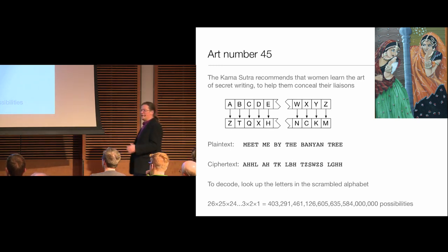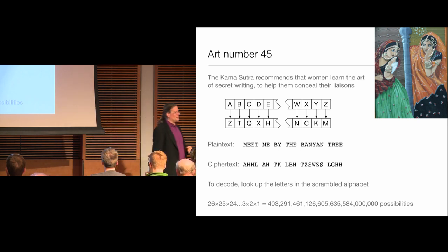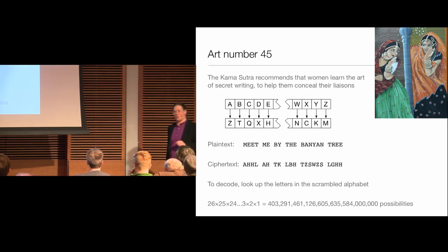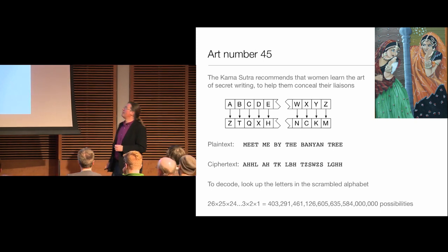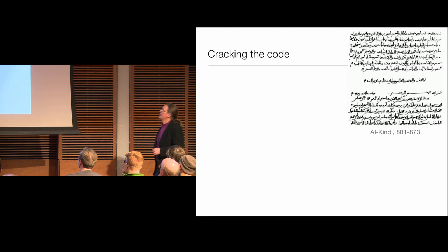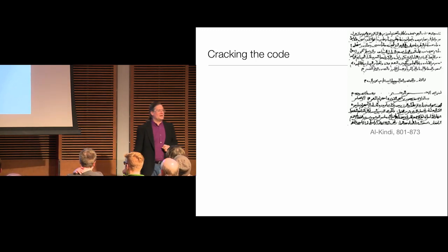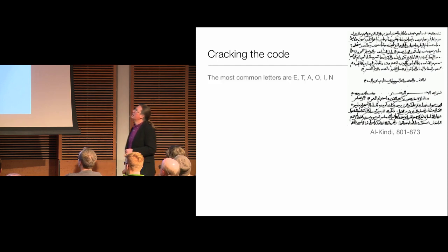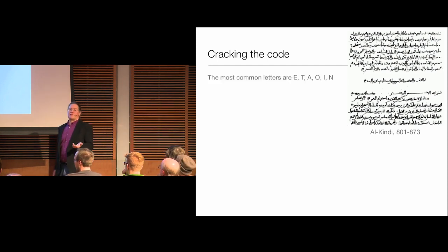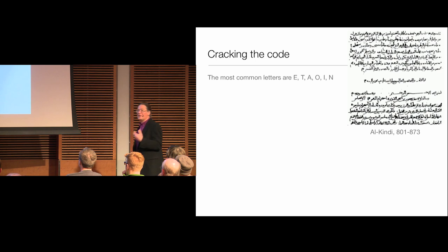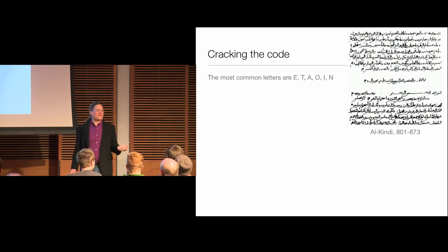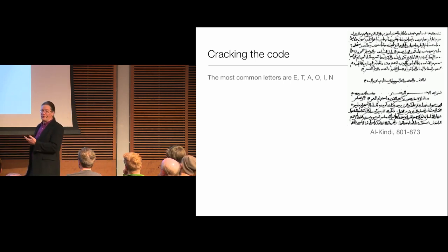This kind of substitution cipher is certainly much more secure and much harder to crack than Caesar's code, but not impossible. The 9th-century mathematician and cryptographer Al-Kindi invented something called frequency analysis. In every language, certain letters are much more common than others. In English, these are E, T, A, and so on. If you have a long enough message, the most common letters probably correspond to those. Only certain letters appear twice next to each other — LL, EE — and there are common digrams like Q almost always followed by U.